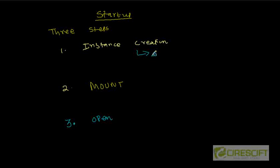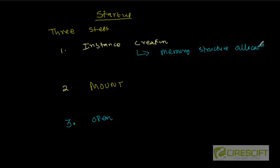In the instance creation step, Oracle reads the parameter file and from that parameter file it finds out how much memory to allocate for the System Global Area (SGA). The following things happen during instance creation: the memory structure is allocated based on the size specified in the parameter file, and background processes are created.